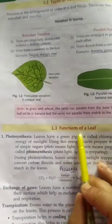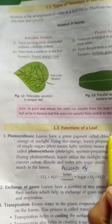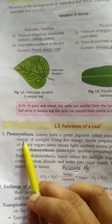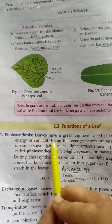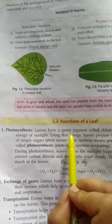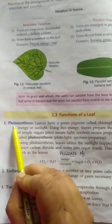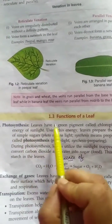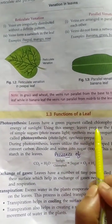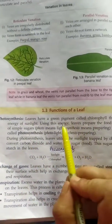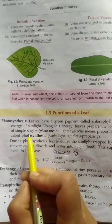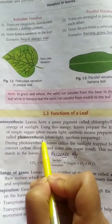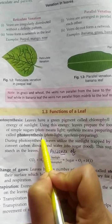Today we will discuss about the functions of the leaves. As you all know, the main function of the leaf is to prepare food for the plant. Through the process of photosynthesis, green plants make their food. Photo means light and synthesis means the process of preparing.